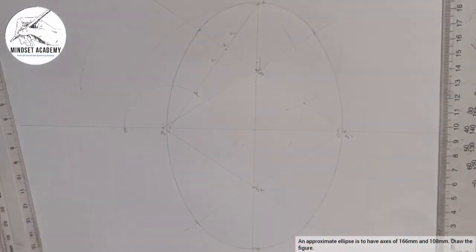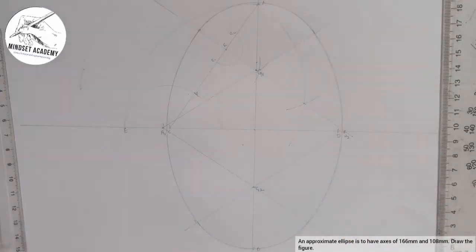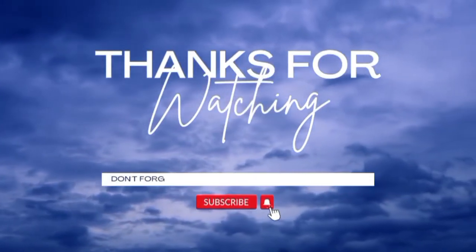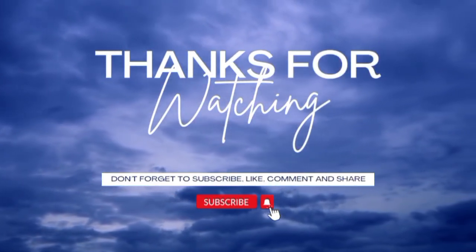So this is our ellipse using approximate method. This is the approximate method of construction of an ellipse. The same procedure if you want to draw a tangent, you follow the same procedure and join it. If you have found this video helpful, please don't forget to subscribe, like, comment and share. Thanks for watching.